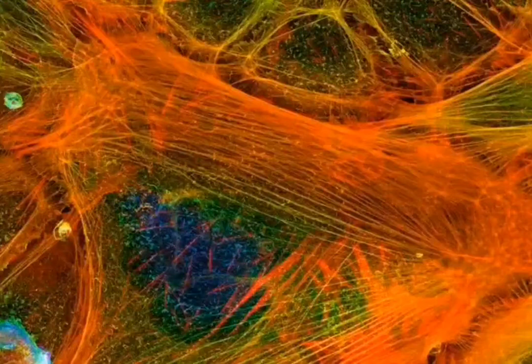Proteins known as cappers can stop the elongation and disassembling of the filaments. A capper attaches to the end of an actin filament and covers it like a hat, blocking activity by the other proteins.